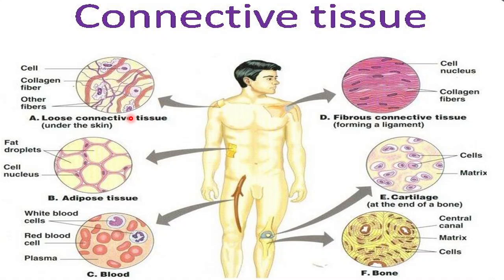Loose connective tissue lies under the skin. Areolar tissue, found under the skin, contains a special type of cell called mast cells. These mast cells release chemicals — histamine and serotonin — which produce inflammation and inflammatory reactions in the body.